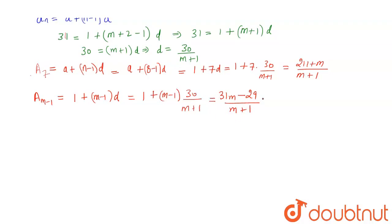As given, the ratio of the 7th term to the (m-1)th term is 5 to 9. So a₇/aₘ₋₁ = 5/9, which means (m+211)/(31m-29) = 5/9. After solving this equation, we get m = 14.